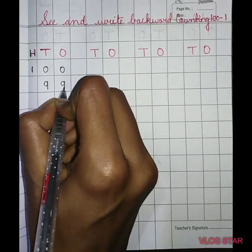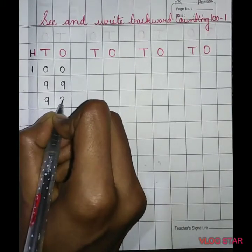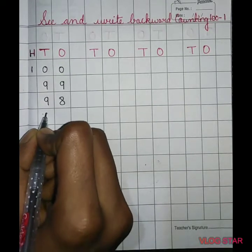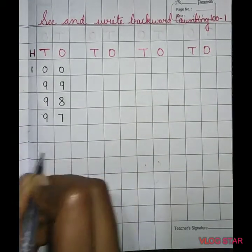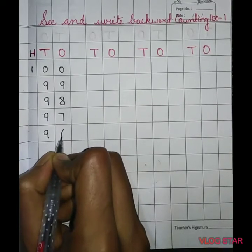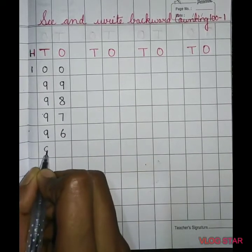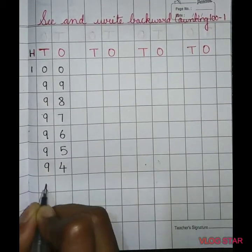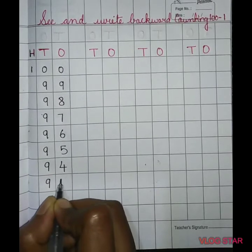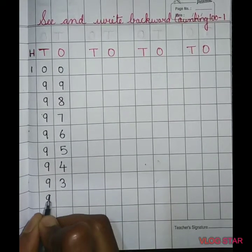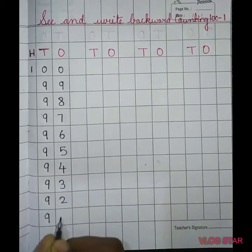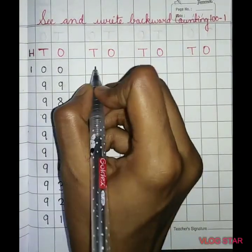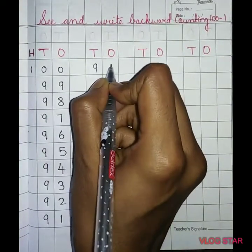99, 98, 97, 96, 95, 94, 93, 92, 91. Now 90.